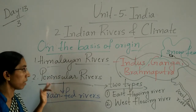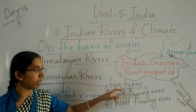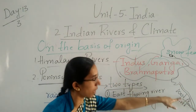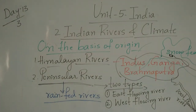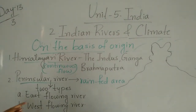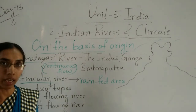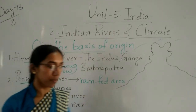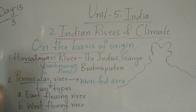Don't confuse — this is for Peninsular rivers only. The major Peninsular rivers are divided into two types: east-flowing and west-flowing. In east-flowing: Mahanadi, Krishna, Godavari, and Kaveri. In west-flowing: Narmada, Tapti, and Sabarmati.